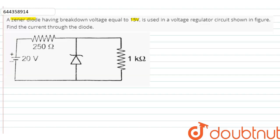So, the given circuit diagram is this one. So, the current through 250 ohm, that is this one, I1 is equal to net voltage upon resistance.